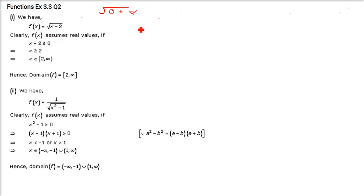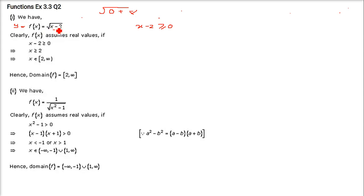Here we have x minus 2 inside a root. So x minus 2 should be greater than or equal to 0 because this is in the numerator only. We don't want a negative value here because if a negative value comes in, the function f(x) is waiting for a real number — it won't get one. Because under root of a negative will be an imaginary number. We will talk about that in complex numbers.